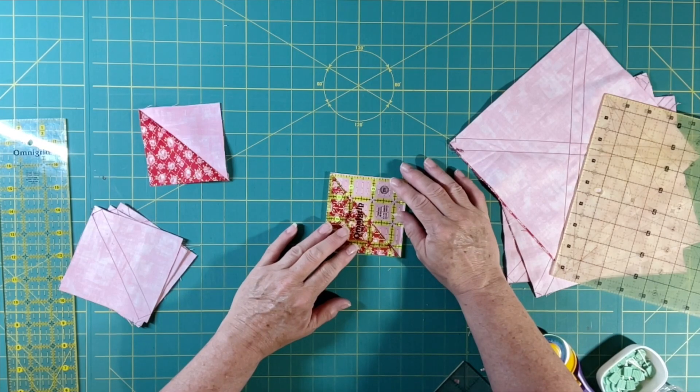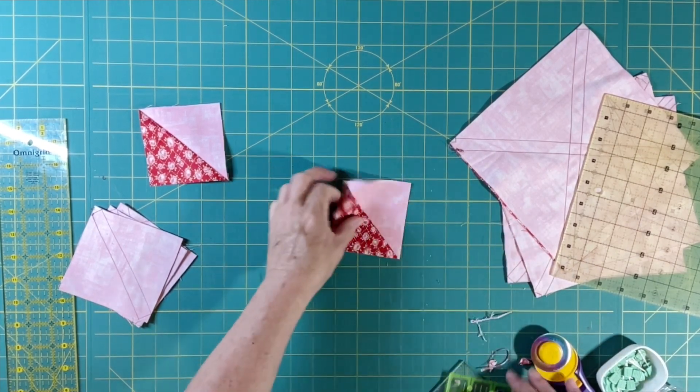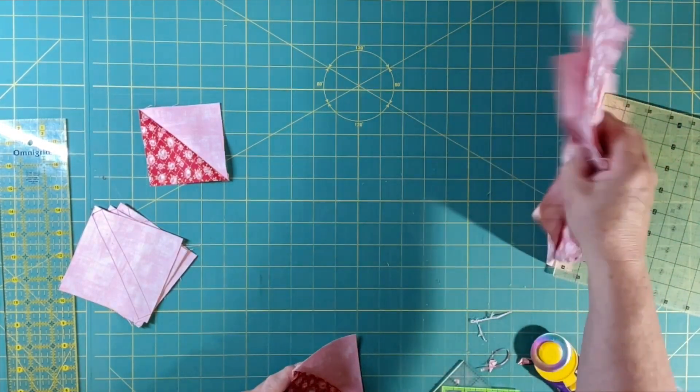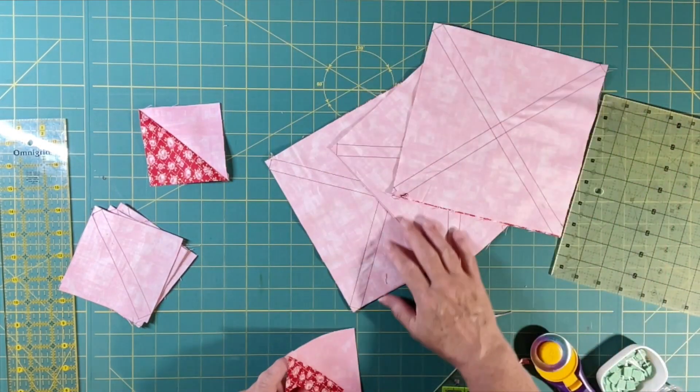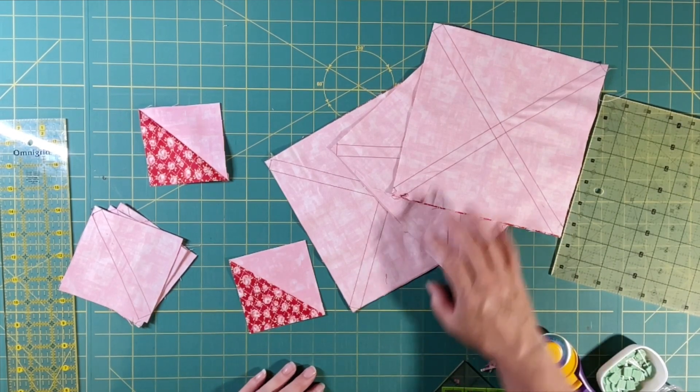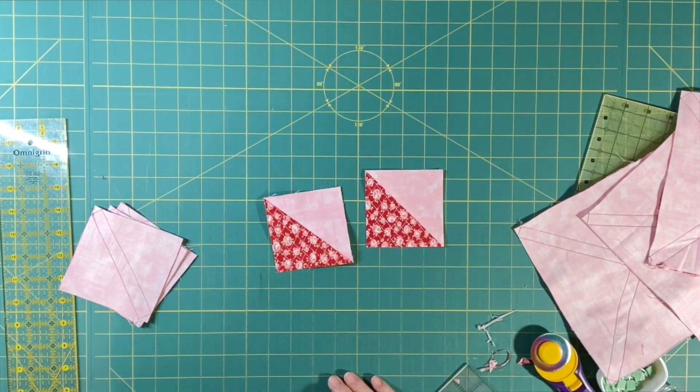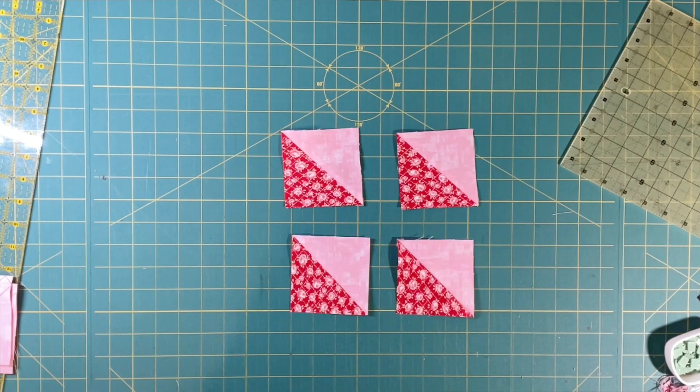And it looks pretty much like I do, perfect. So you just continue with that process with your other three just like we just did, trim them, and you will have 32 perfect half square triangles for your project. Stay tuned, we'll have more quilting techniques on the channel and thank you for watching.